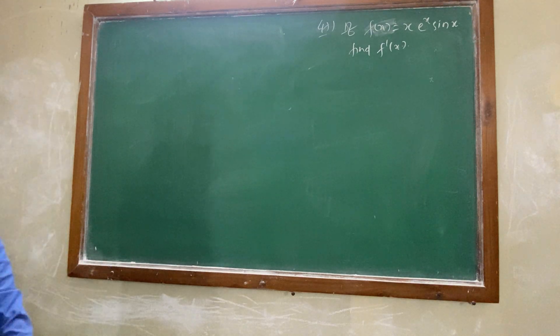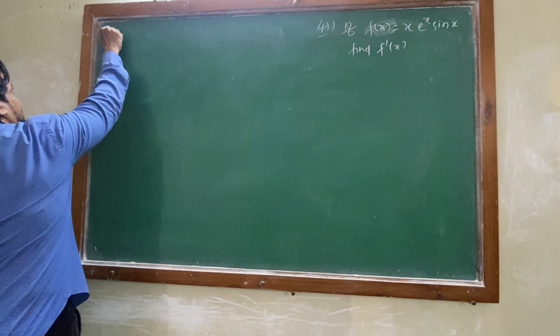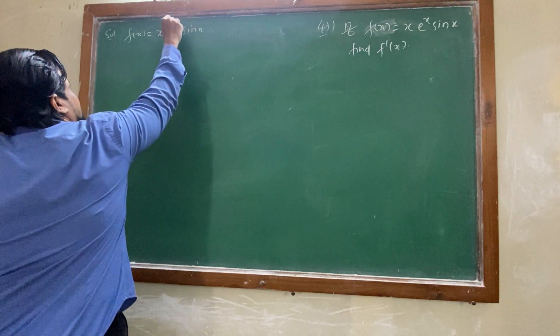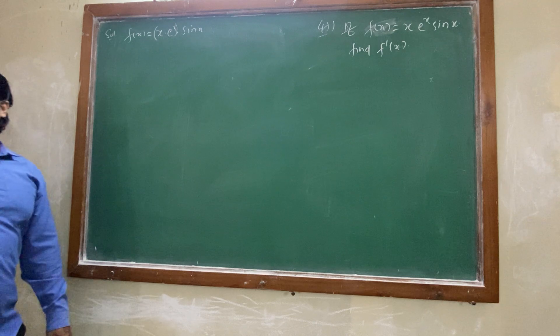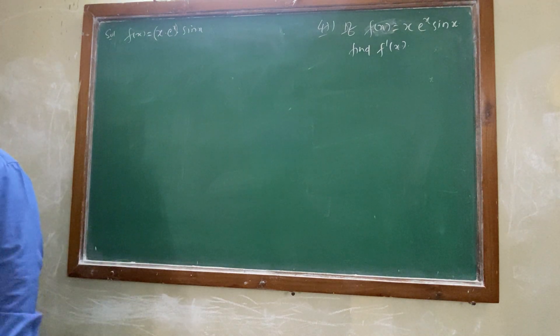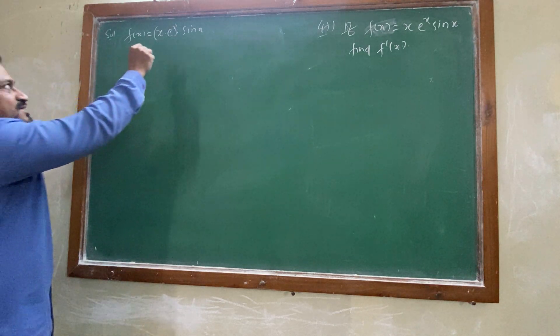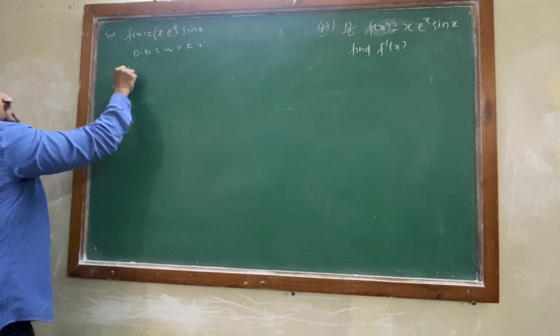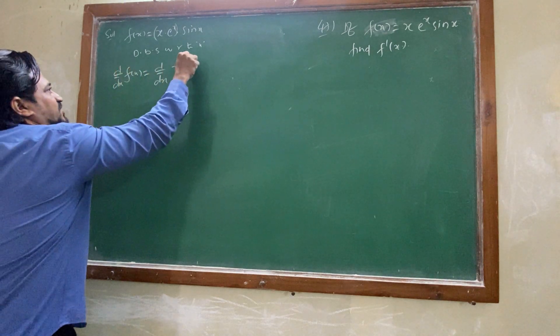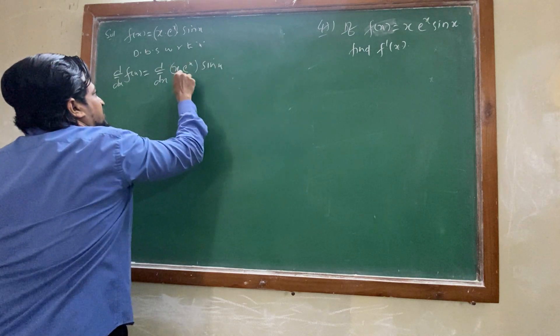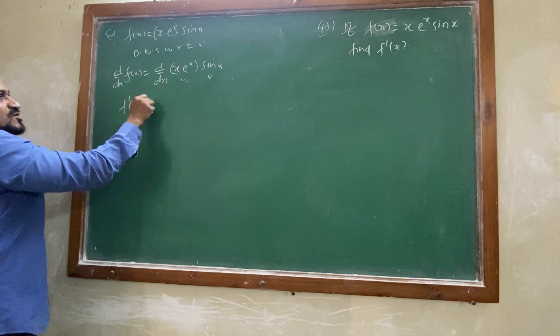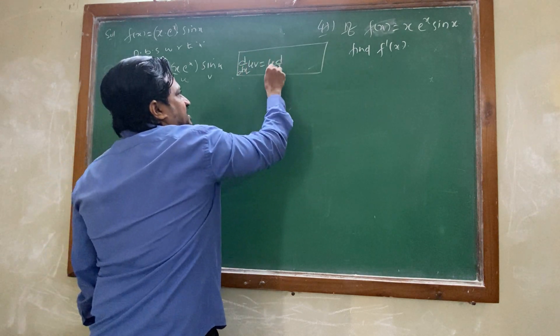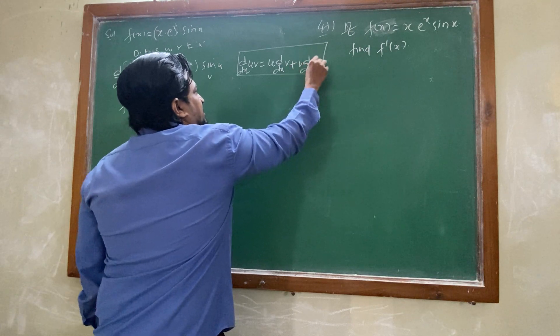Check the next one. F of x equals to x into e power x into sine x is given. So first we will write the given thing. If three multiples are there, take two multiples in bracket. Or else we have one more formula u, v, w. To avoid that, take two terms as one bracket. Then differentiating both sides with respect to x. D by dx will take for f of x. D by dx will take for x into e power x into sine x. This is f dash of x. What is u, v form? You need to consider one box for the writing formula. D by dx of u, v is u, d by dx of v, plus v, d by dx of u.